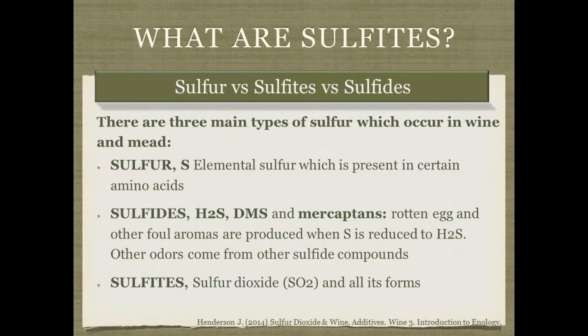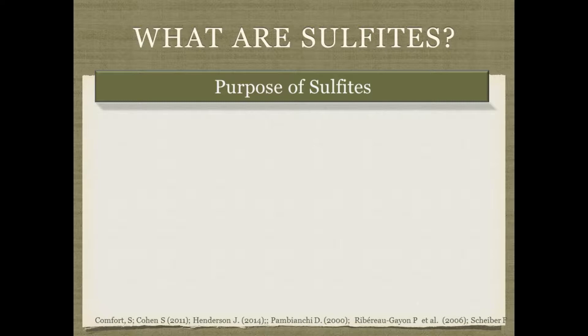We'll be talking about how to use sulfites in mead and the different purposes for them. First, sulfites are an antioxidant and help preserve fresh aroma and color. An old wine can sometimes be oxidized and won't be as bright red — more of a brown or rust color. But sometimes you really want to preserve the fresh aroma and color from the honey or fruit you've used to make that mead.